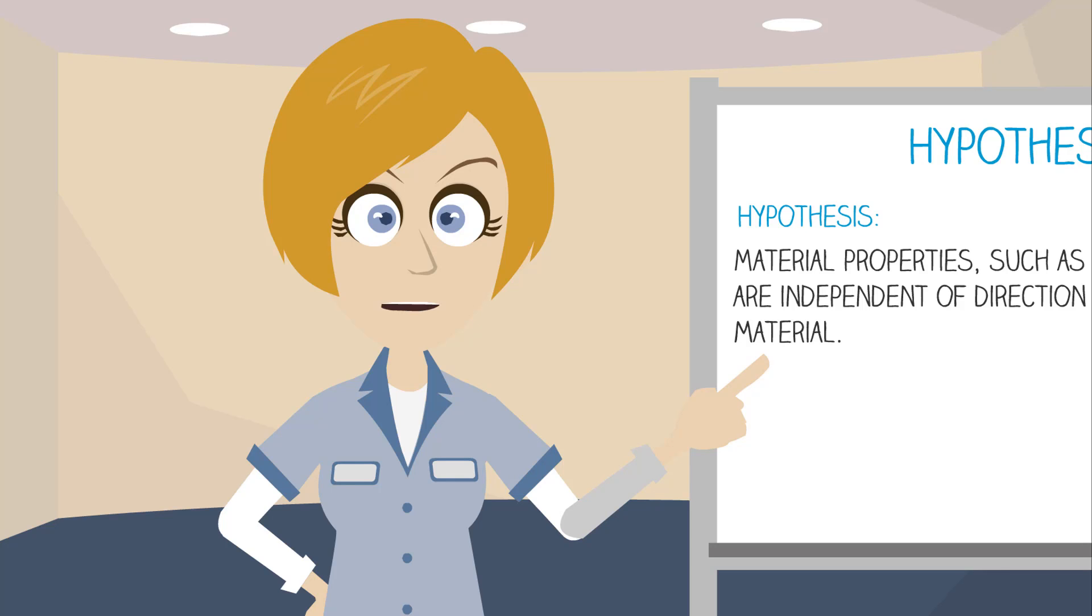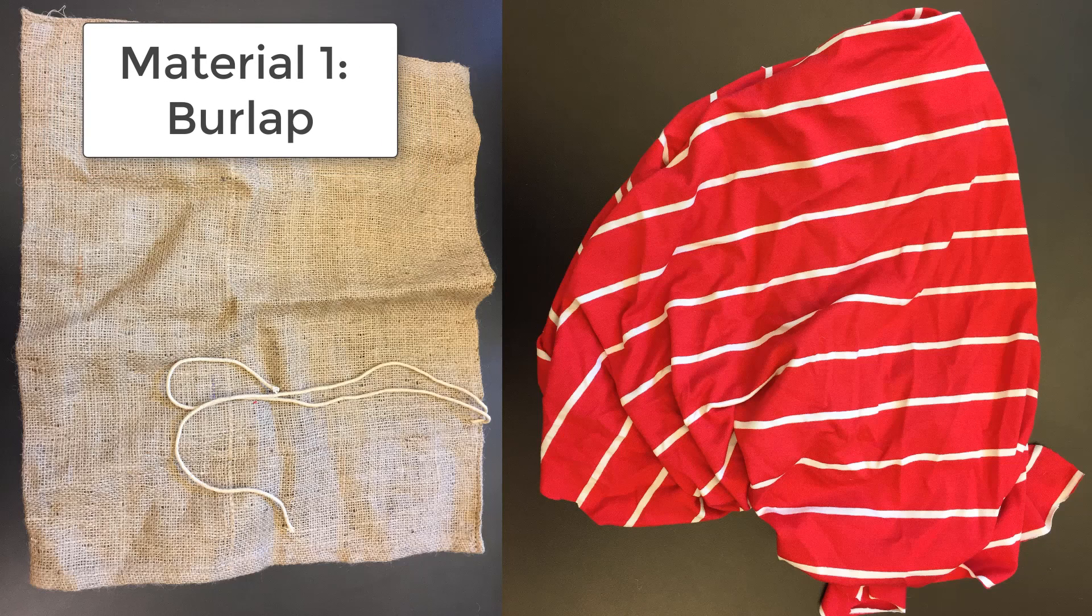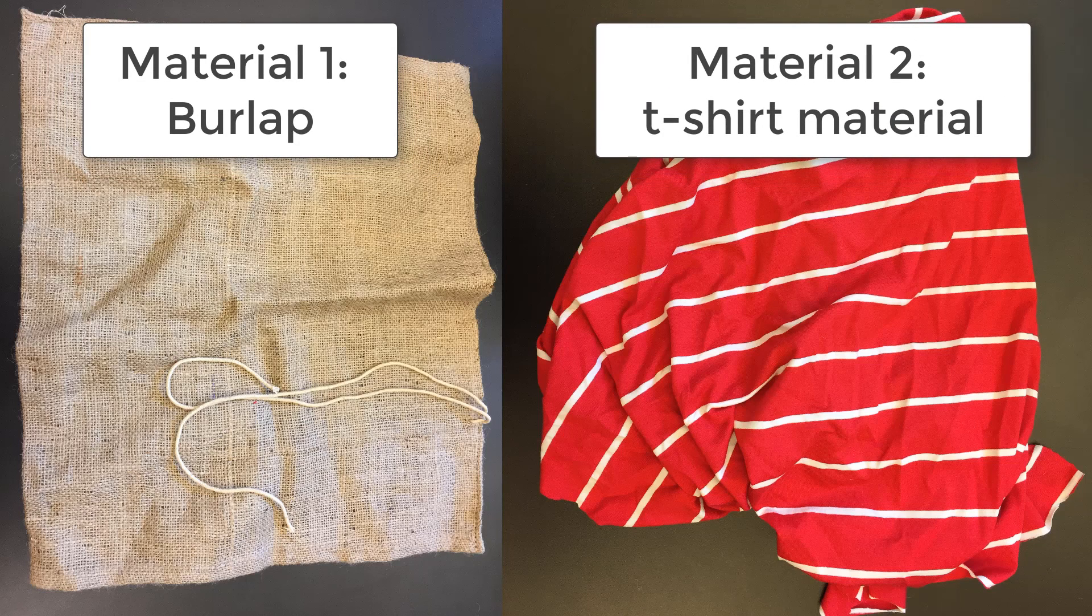Now that we have a concept for our test, let's see if we can carry it out. For this experiment, we are going to test two different materials: burlap, which is a fibrous material used for making things like potato sacks, and some cotton fabric used to make t-shirts.